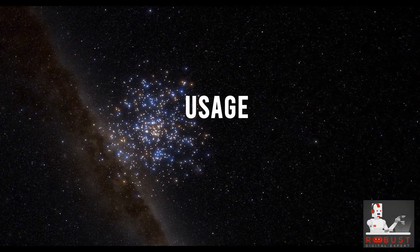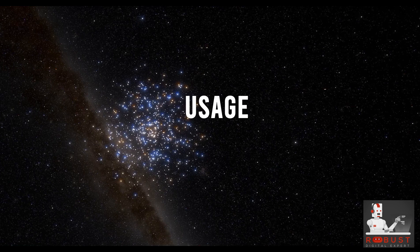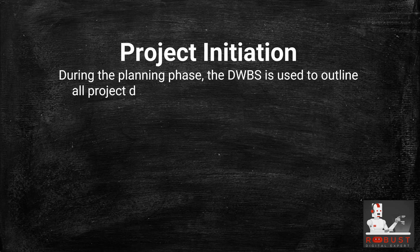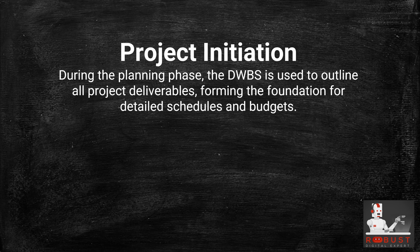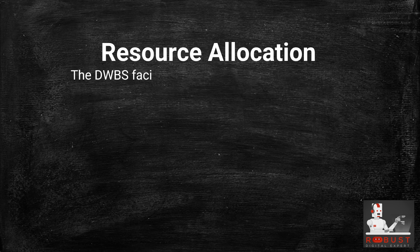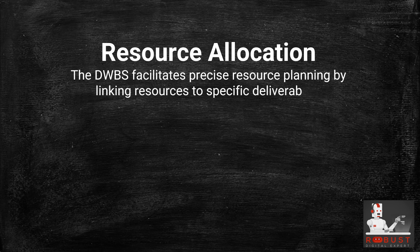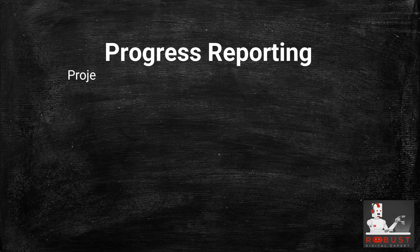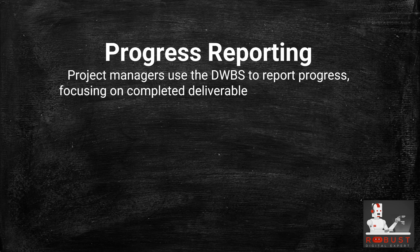Project Usage. During the planning phase, the DWBS is used to outline all project deliverables, forming the foundation for detailed schedules and budgets. Resource allocation: The DWBS facilitates precise resource planning by linking resources to specific deliverables. Progress reporting: Project managers use the DWBS to report progress, focusing on completed deliverables and any remaining work.